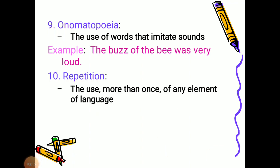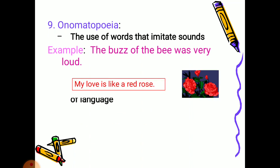Repetition is the use of more than once of any element of language. It means the same word is repeated in a line, stanza, or poem. If it is repeatedly used, then it is called repetition.